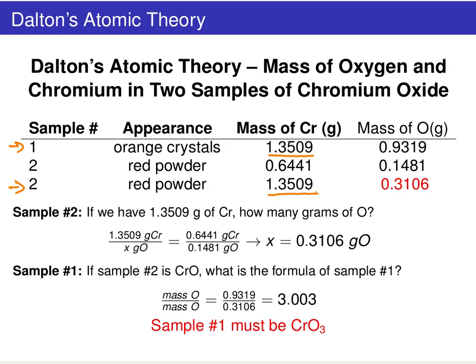Now what we do is take the corresponding masses of oxygen and look at their relative relationship. We know that sample two has only one oxygen per chromium.